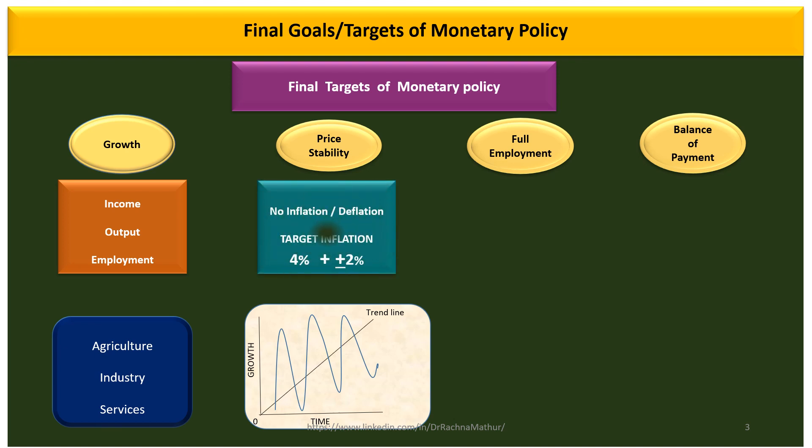Next is price stability, which means the economy should not have either hyperinflation or deflation. According to the Monetary Policy Committee, the target inflation for India is 4% with a 2% upper and lower band, which is acceptable for the economy. Economy without inflation cannot grow, but inflation should be managed carefully so it does not move beyond the target.